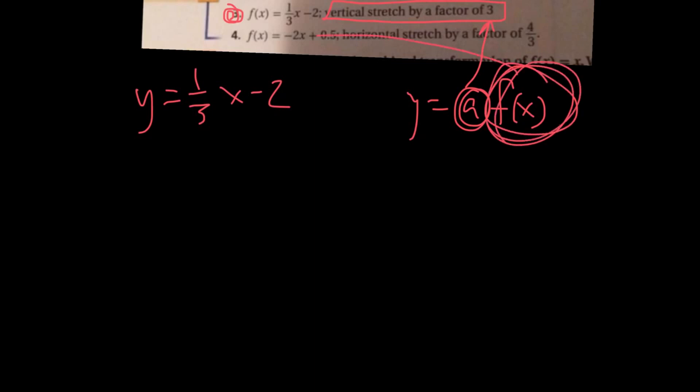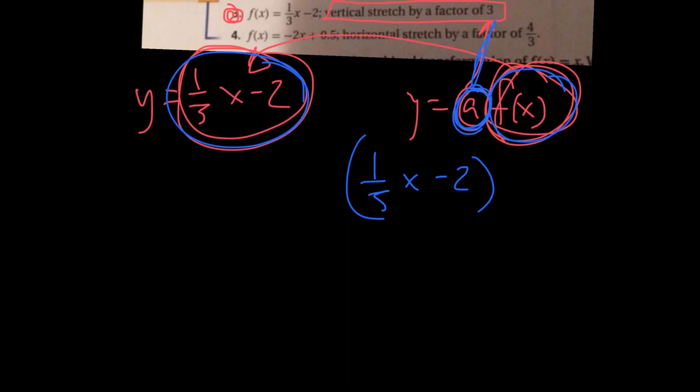So it's one-third X minus 2, and then you put this number where that a is, so it'd be 3. You just multiply it in there, so that'd be 3 on top. So 3 divided by 3